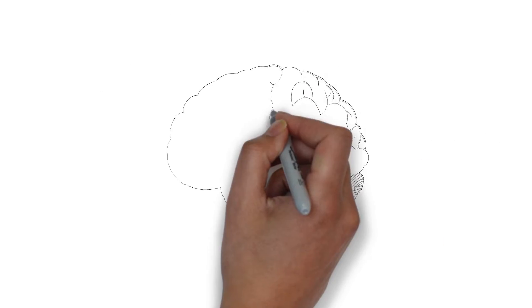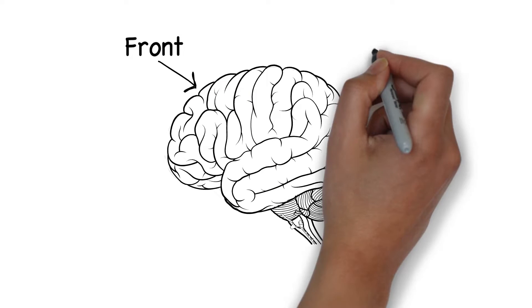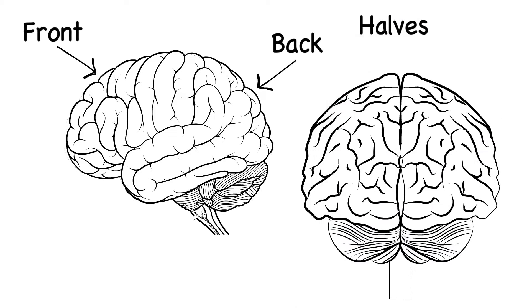This video will give you an overview of the key structures of the human brain. This is the front, this is the rear and these are the two sides.